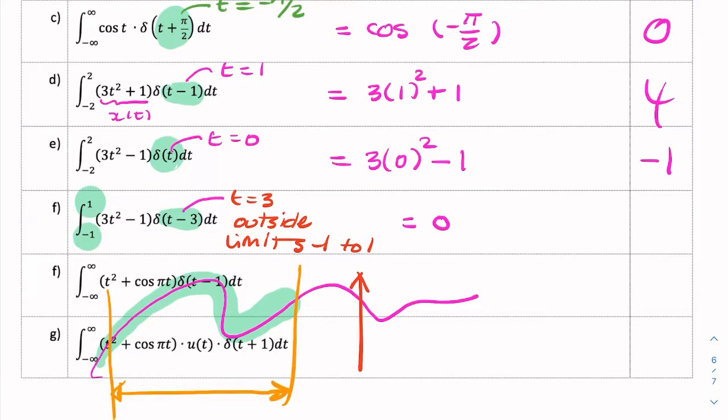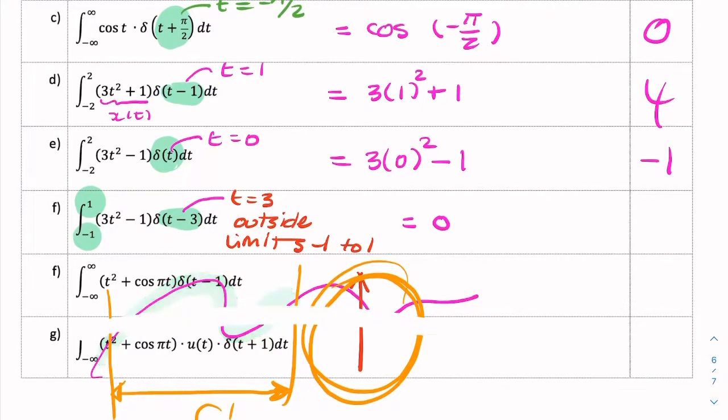This is your integration from minus 1 to 1. It doesn't include the impulse at t equals 3, so the answer is just 0.